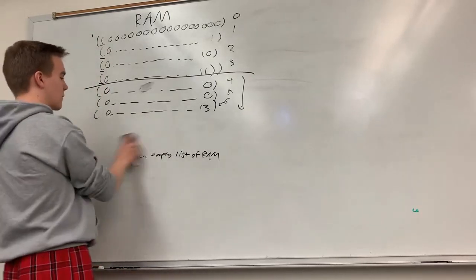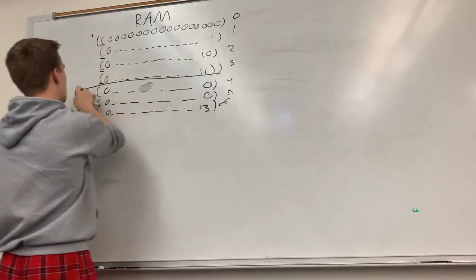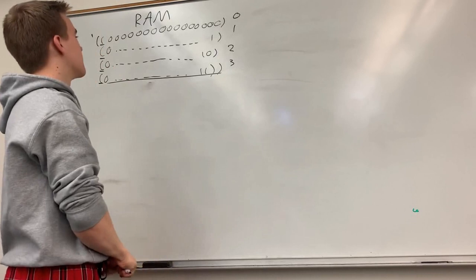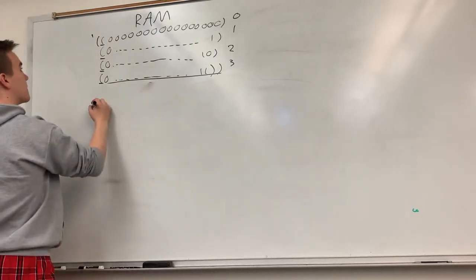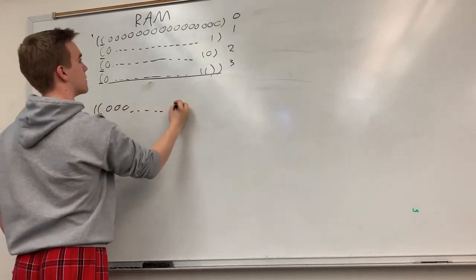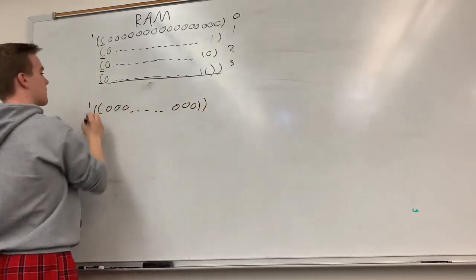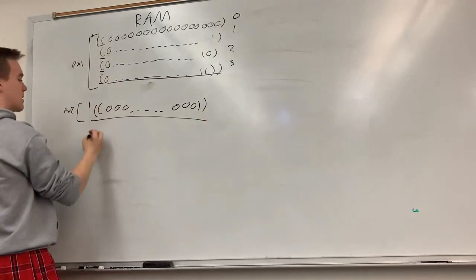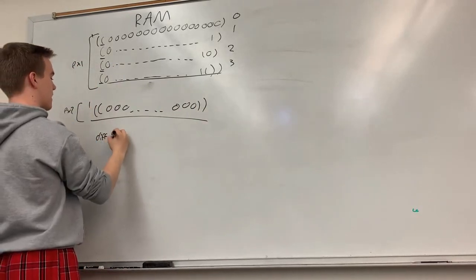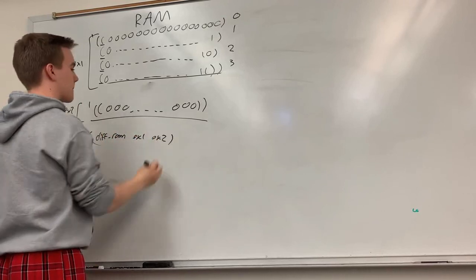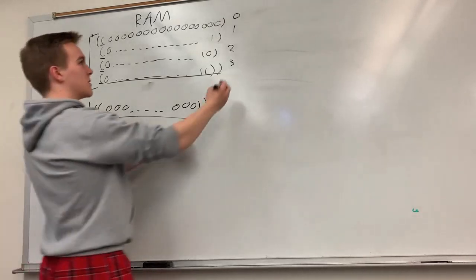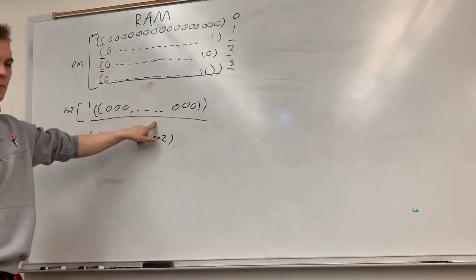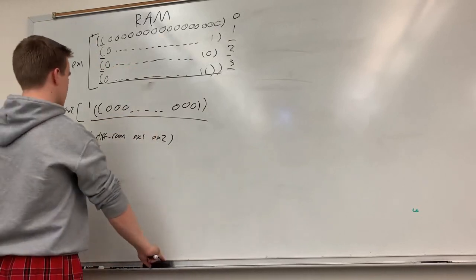The final one we have to think a little bit hard about is diff RAMs. Say I have this RAM over here, and I have another RAM that's just this. I diff these — this is ex1, this is ex2 — and I run diff RAM ex1, ex2. Well, they're different at positions 1, 2, and 3 because ex1 has these three things here, and ex2 has all zeros at positions 1, 2, and 3 — because those positions are not specified.